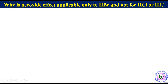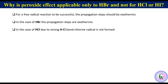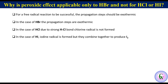Now we will discuss why the peroxide effect is applicable only to HBr and not to HCl or HI. The answer is that for a radical reaction to be successful, the propagation step should be exothermic. In the case of HBr, the propagation steps are exothermic. In the case of HCl, due to a strong HCl bond, the chlorine radical is not formed. While in the case of HI, iodine radical is formed but the iodine radicals combine together to produce an iodine molecule, preventing chain propagation.